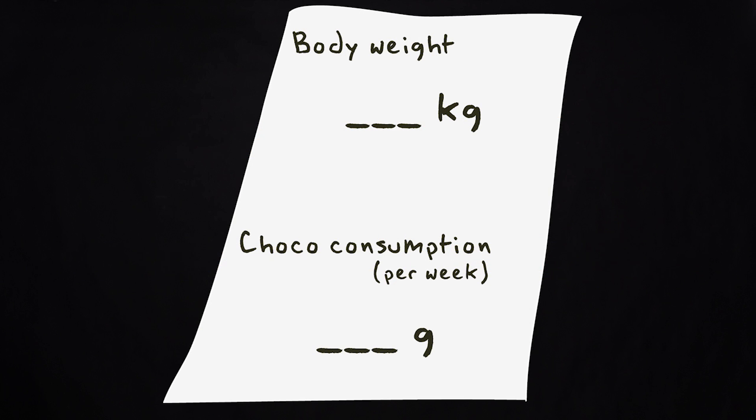Suppose that instead of providing categories, I ask the 200 women to give me their exact body weight, for instance, 65 or 72 kilograms. Suppose I also ask them to tell me how much chocolate they eat every week. That could be, for instance, 64 or 99 grams per week.